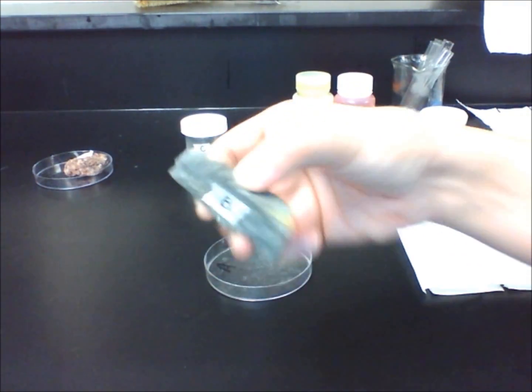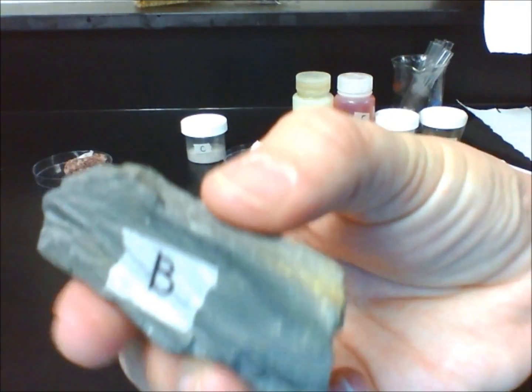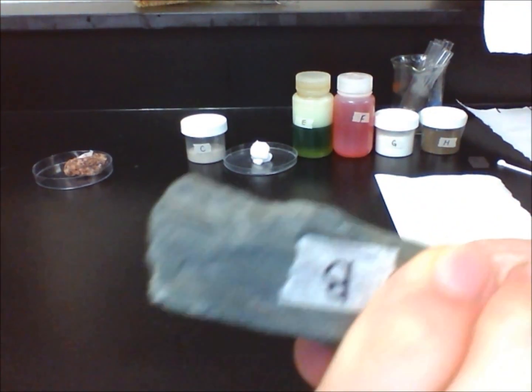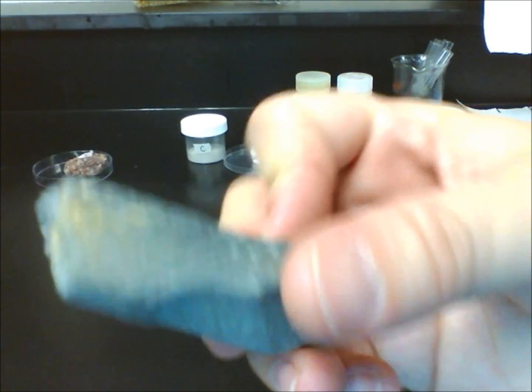Sample B, a piece of slate rock, appears to have one consistent color. However, when looking through a magnifying loop, very fine grains of different minerals can be seen. Therefore, sample B is also a mixture.